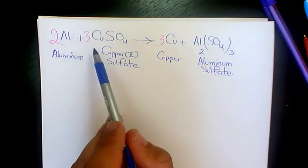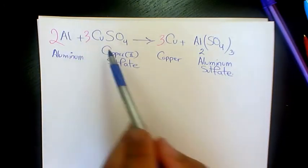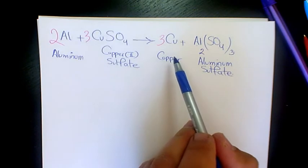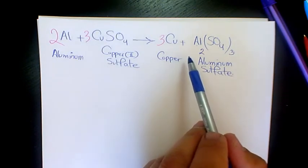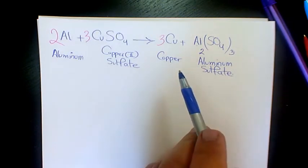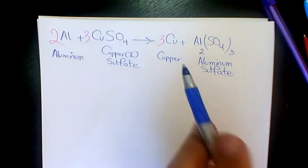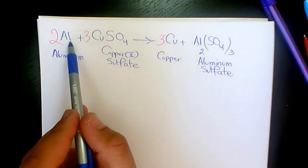3 moles of copper(II) sulfate in order to produce 3 moles of copper and 1 mole of aluminum sulfate. So that's how we balance this reaction. And this reaction, since we have Al plus copper sulfate, we're gonna call it